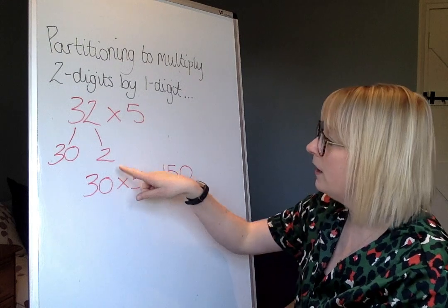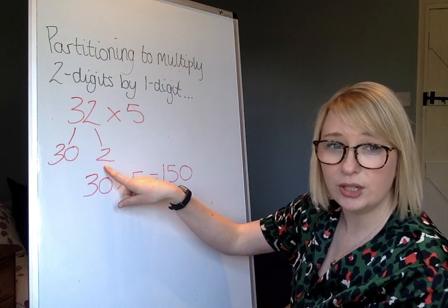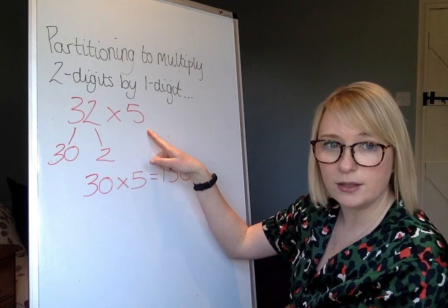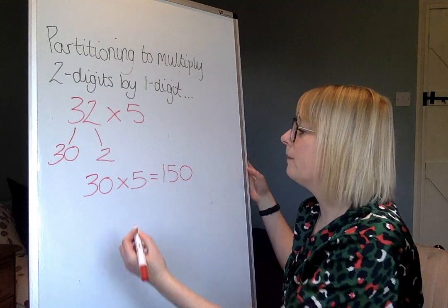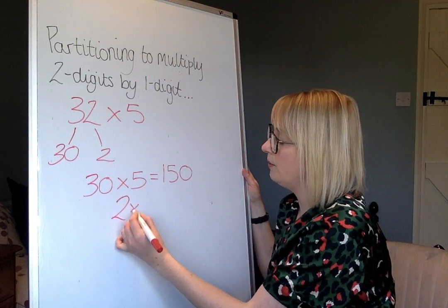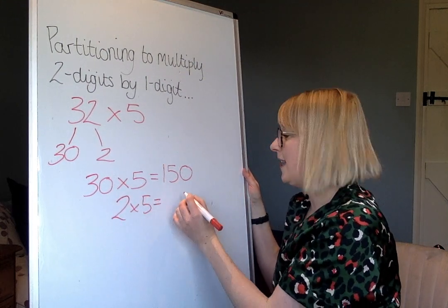Step three is to take your ones digit, your units digit, and multiply it by the integer you're multiplying by. 2 times 5, which is 10.